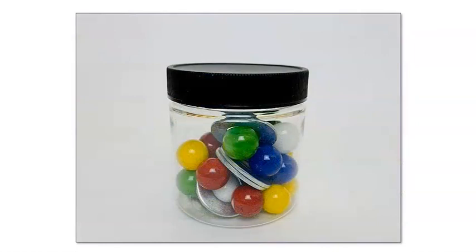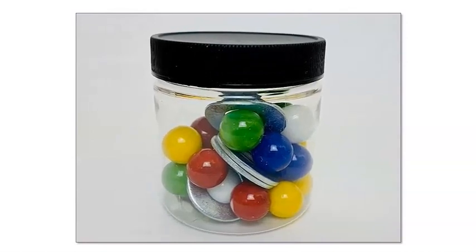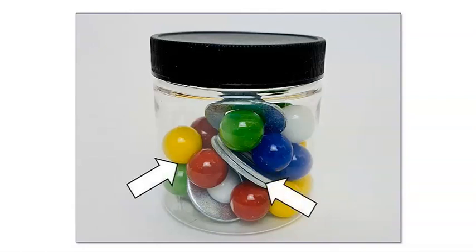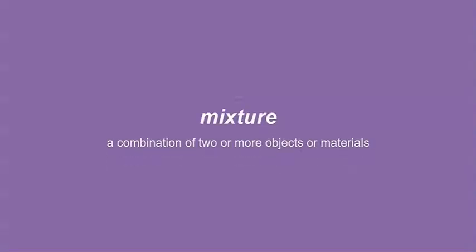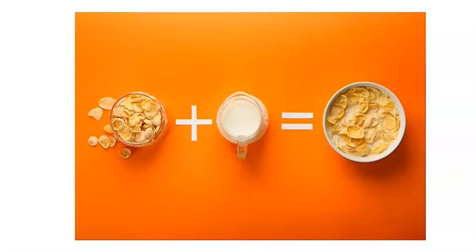What do you observe in this container? I see two types of objects in the jar. The jar contains a mixture of marbles and washers. A mixture is a combination of two or more objects or materials. When I make a bowl of cereal for breakfast, I create a mixture by mixing cereal and milk. Let's make another mixture together.